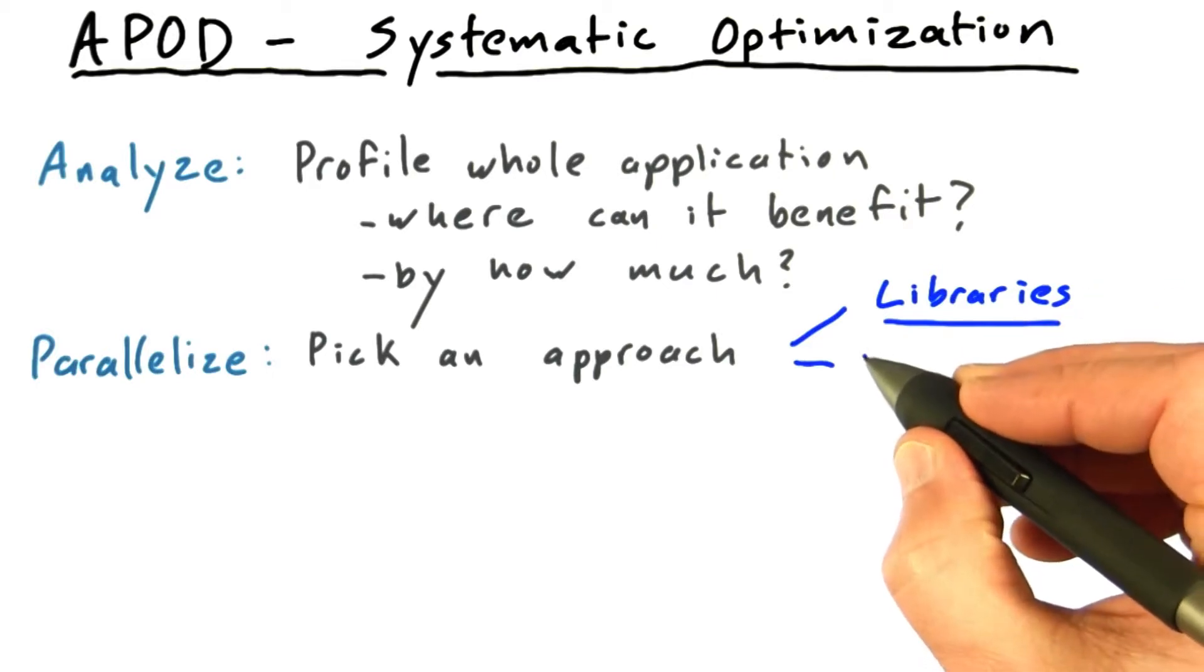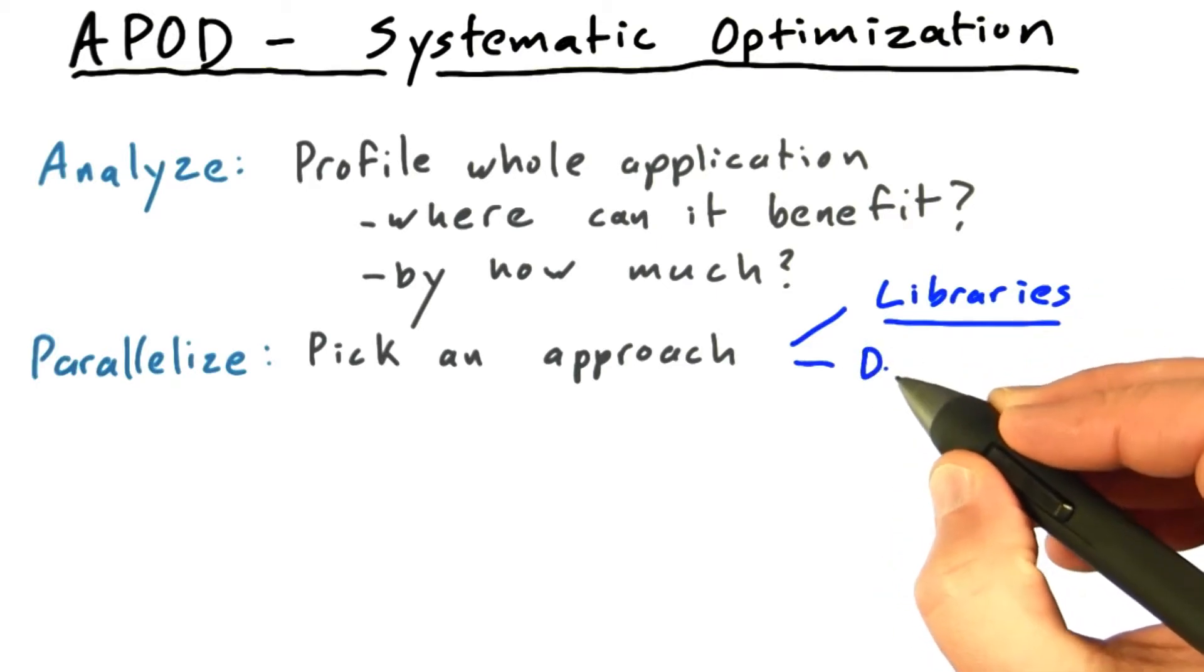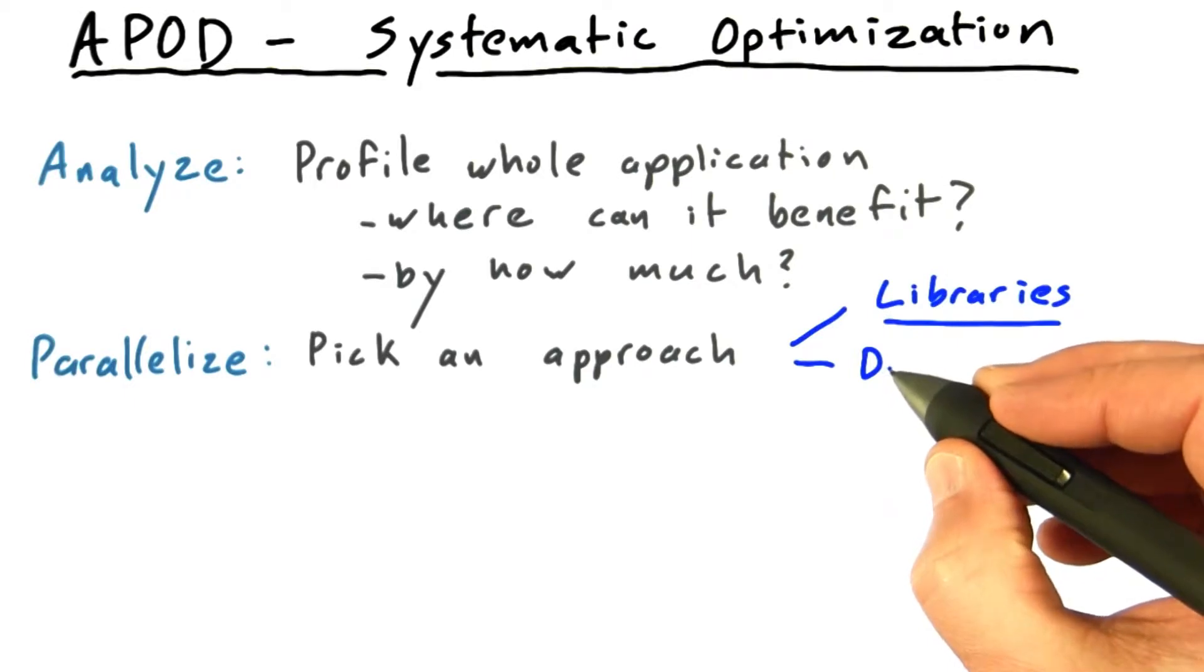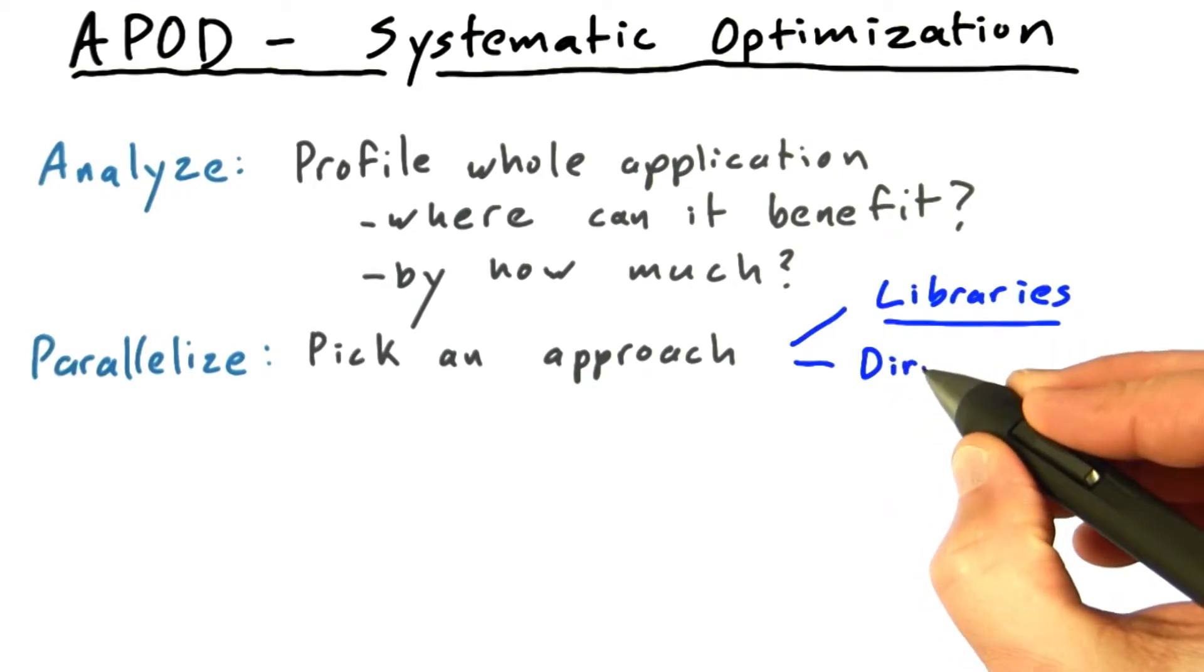Sometimes you have a lot of code and you want to be able to instrument it. You want to do a minimal amount of work to get a little bit of parallelization. There's an approach for this called directives.